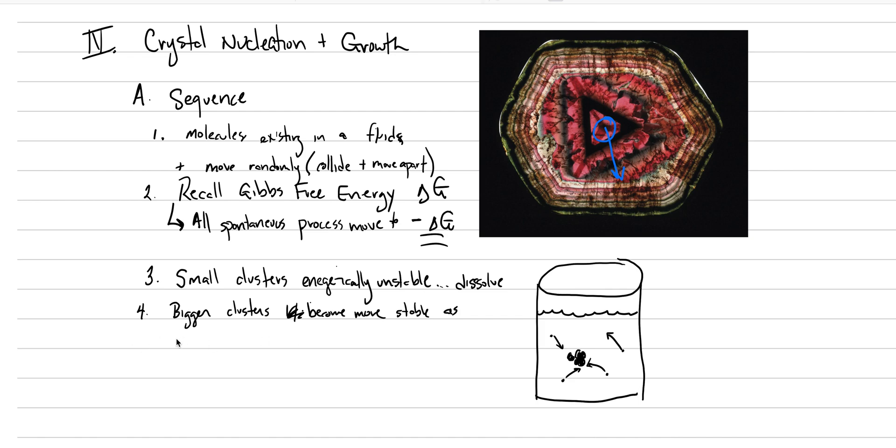We want to reduce the surface area to volume. As surface area, that's where all those unsatisfied bonds are. Surface area diminishes relative to volume. This is a big principle right here. So we've got bigger clusters start to form.